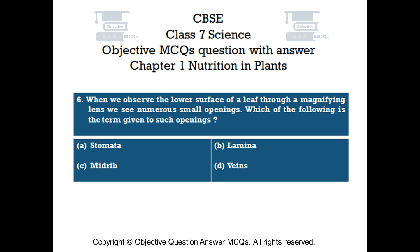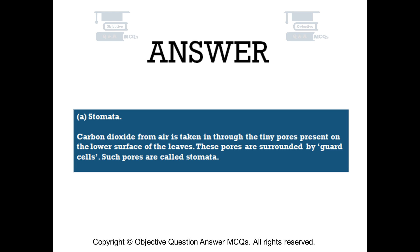The right answer is option A: stomata. Carbon dioxide from air is taken in through the tiny pores present on the lower surface of the leaves. These pores are surrounded by guard cells. Such pores are called stomata.